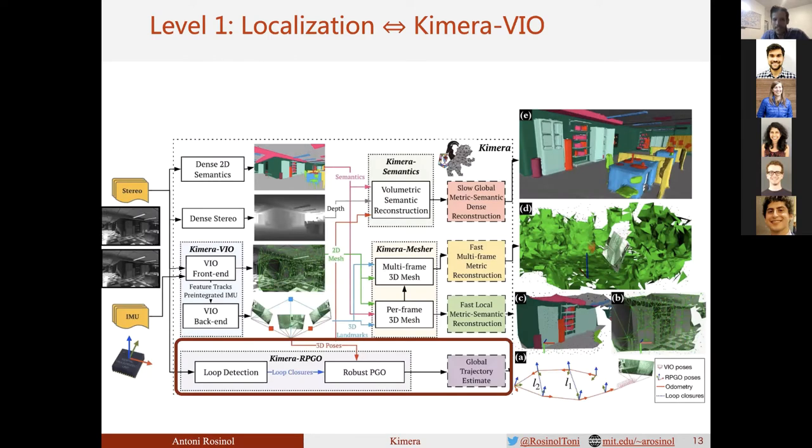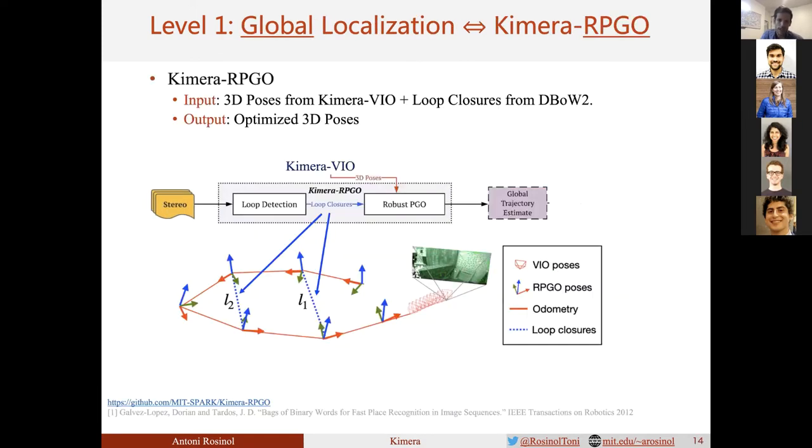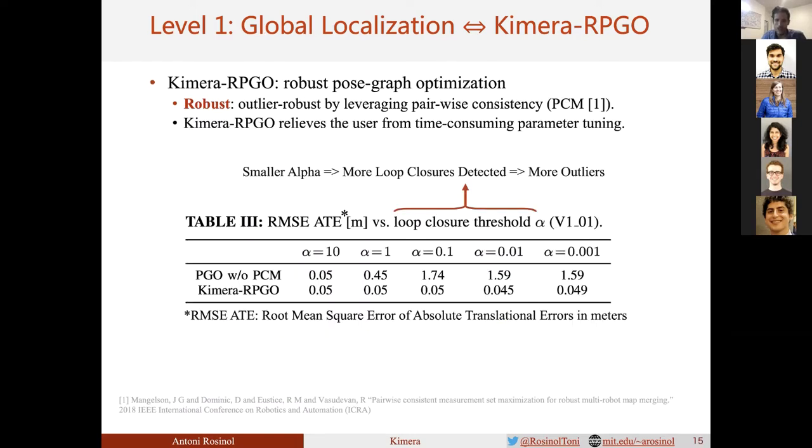Now let's look at Kimera-RPGO, which solves a pose graph optimization problem with loop closures detected using a bag-of-words approach. Given the pairwise relative odometry estimates from Kimera-VIO, which provides locally accurate pose estimates, we detect loop closures using DBoW2 and solve the pose graph to obtain globally accurate 3D poses. We use an outlier-robust optimization approach that checks for loop closure consistency, similar to PCM, tailored to a single robot and online setup.